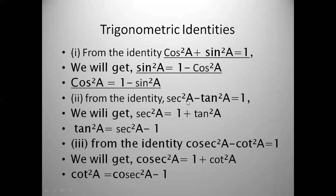Now see the second identity: sec²θ minus tan²θ is equal to 1. From this identity we can get two more. Transpose minus tan²θ to the right-hand side — it changes to plus — so sec²θ is equal to 1 plus tan²θ. For tan²θ, transpose sec²θ to the other side; you get minus tan²θ equals 1 minus sec²θ. Multiplying both sides by minus, tan²θ equals sec²θ minus 1.